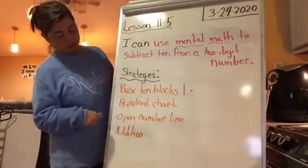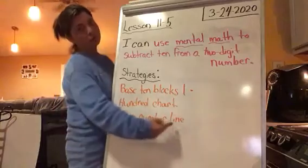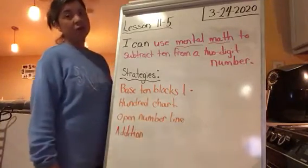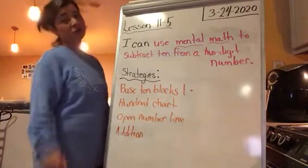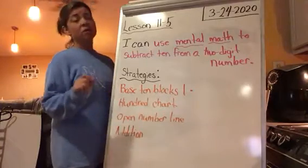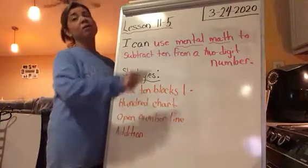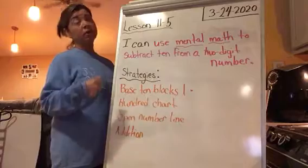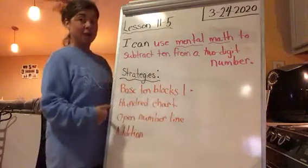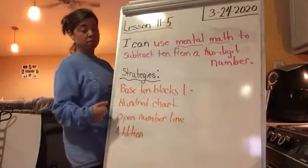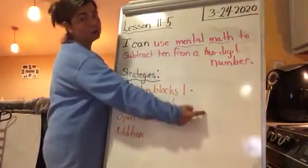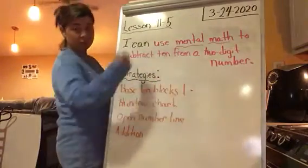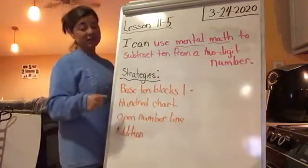The next strategy we used was an open number line. We talked about two different ways: counting backwards on an open number line, because when you subtract you go backwards, so you start on the right-hand side and jump back when counting by tens.